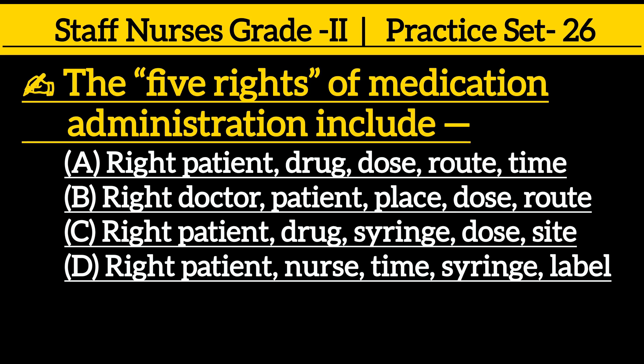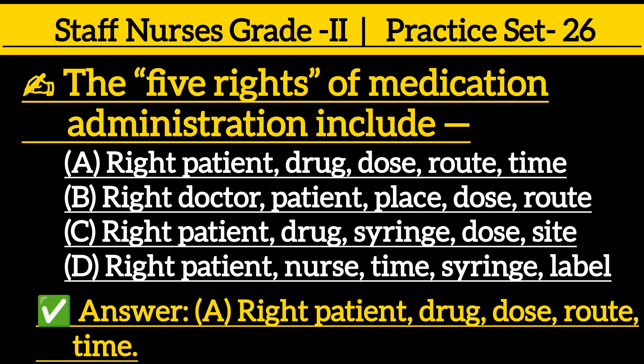Next question: the five rights of medication administration include — option A: right patient, drug, dose, route, and time; option B: right doctor, patient, place, dose, and route; option C: right patient, drug, syringe, dose, and site; option D: right patient, nurse, time, syringe, level. The correct answer is option A: right patient, drug, dose, route, and time.